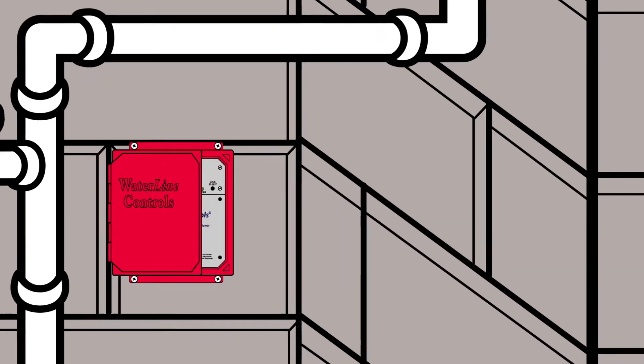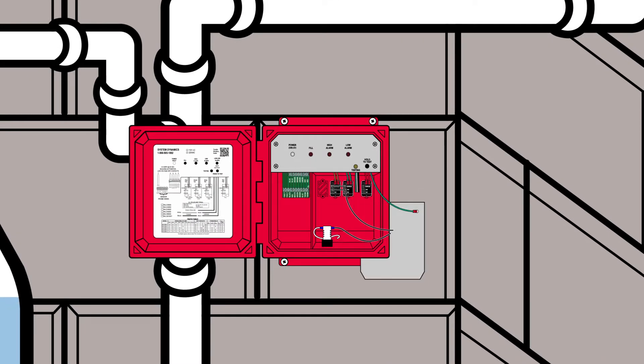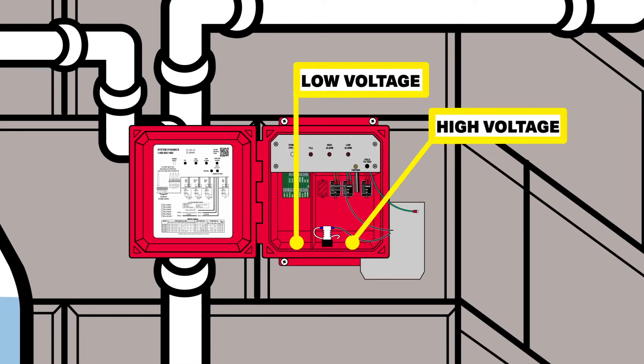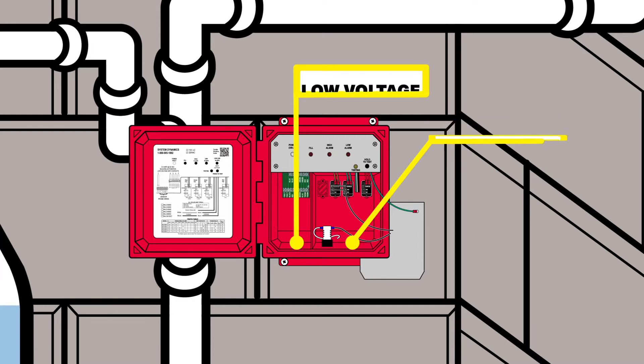When running metal conduits, keep note of the high-voltage and low-voltage compartments in the waterline panel. It's important to not have low-voltage conduits run parallel to high-voltage conduits without proper spacing in order to avoid inductive electrical interference.